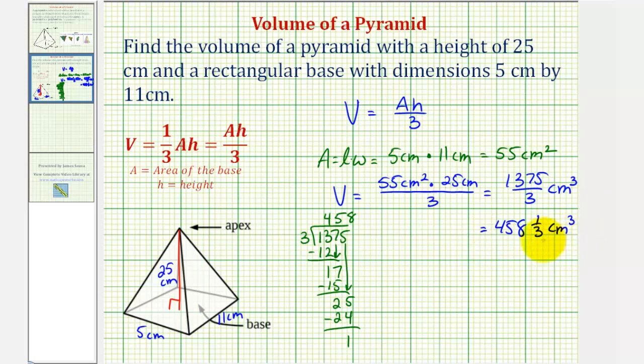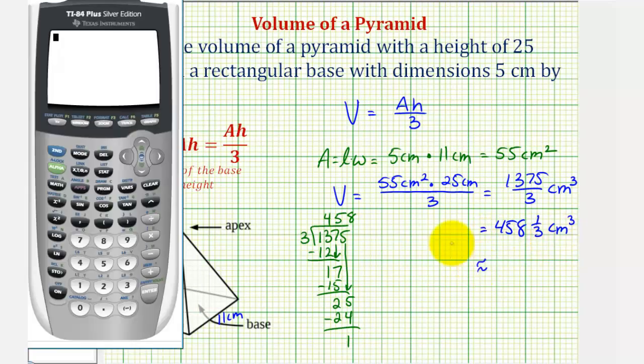And just in case we are asked to round to, let's say, two decimal places, let's go ahead and convert this to a decimal. We can get our decimal approximation using this fraction here or just by converting 1/3 to a decimal. Let's show it both ways. 1,375 divided by 3 rounded to two decimal places, notice, would be 458.33.